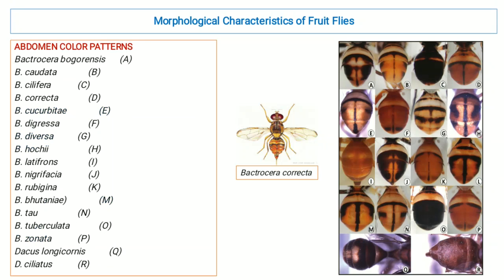The next taxonomic character is abdomen color patterns. In this figure, the abdomen color patterns of different species of fruit flies belonging to genus Bactrocera and Dacus have been shown — Bactrocera bocorrhensis, Bactrocera quadata, cilifera, characta, Bactrocera tau, and the genus Dacus, which consists of the species Dacus longicornis and Dacus ciliatus.